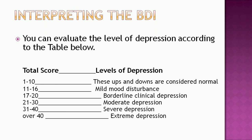You can evaluate the level of depression according to the following table: a total score of 1 to 10 — these ups and downs are considered normal; 11 to 16 — mild mood disturbance; 17 to 20 — borderline clinical depression; 21 to 30 — moderate depression; 31 to 40 — severe depression; and over 40 — extreme depression. Using this table you can interpret the results of the test and accordingly write the report.